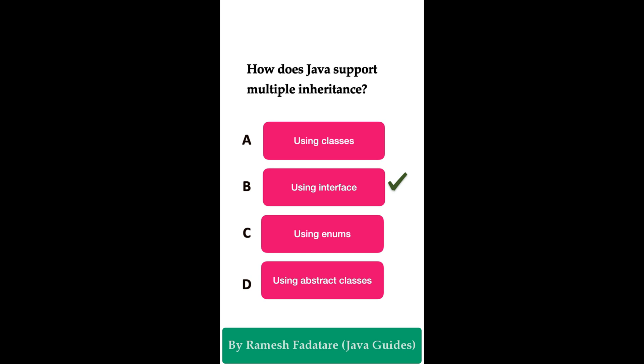However, Java allows a class to implement multiple interfaces, which enables a form of multiple inheritance. A class can implement multiple interfaces and override the methods from those multiple interfaces and provide its own implementation.